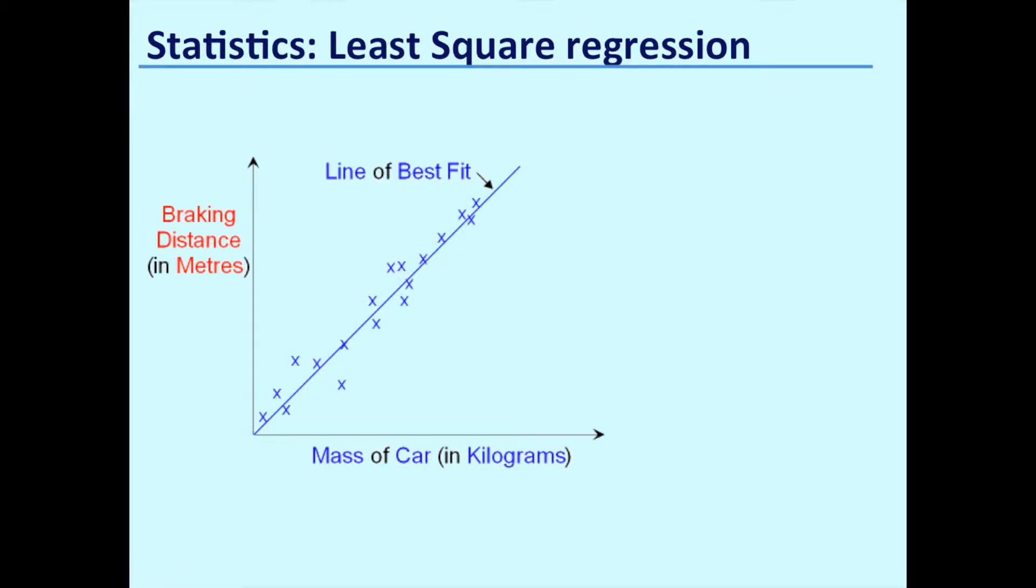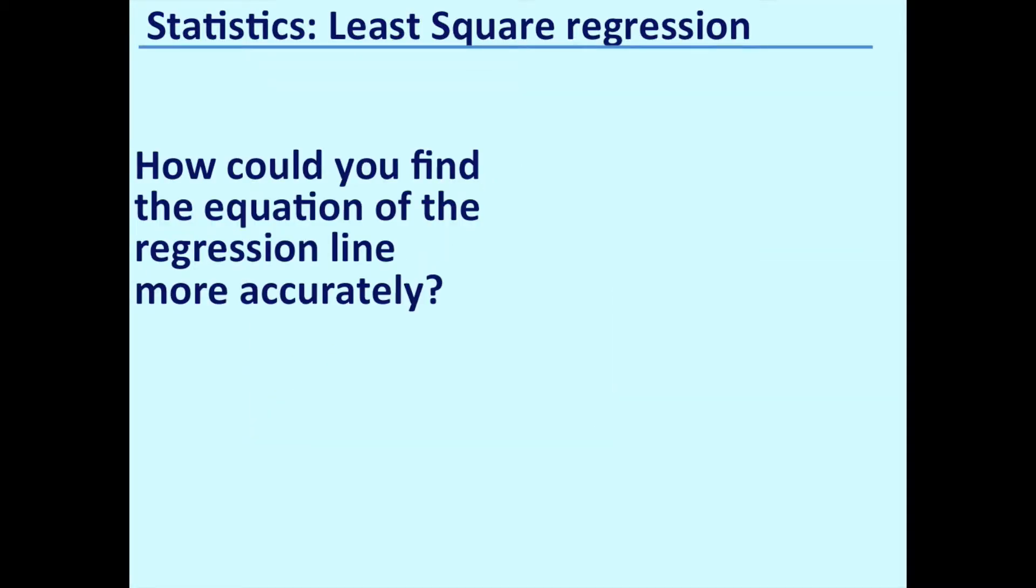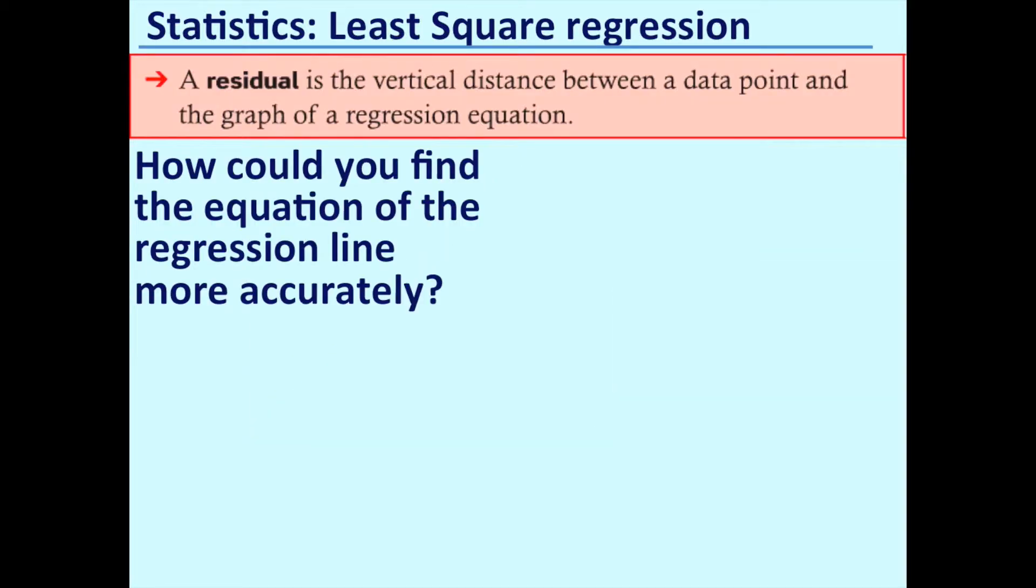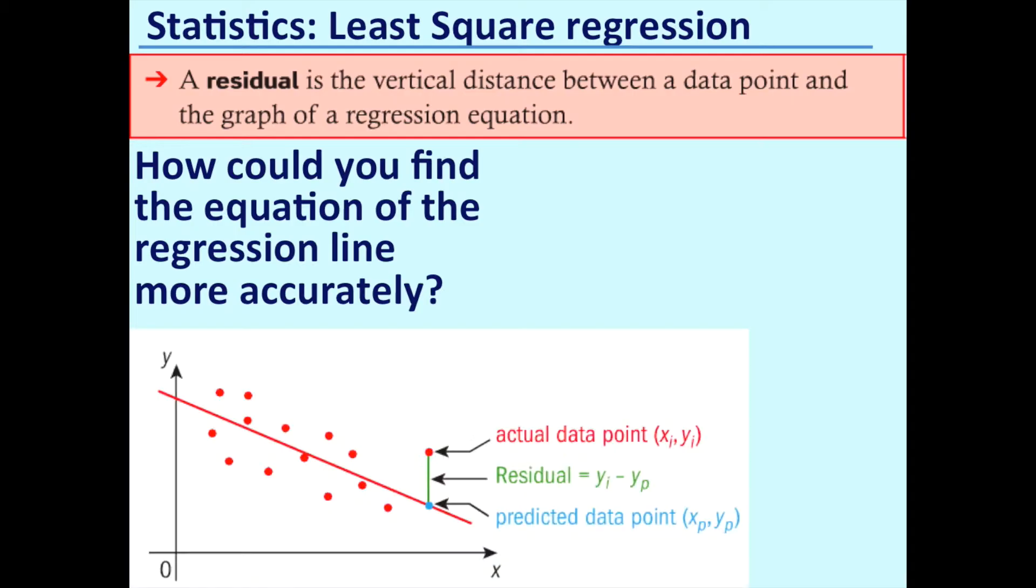However, we also saw in the examples that you could have had a different answer to the person next to you in terms of the equation of the line of best fit and both being right. What we're going to look at today is how we can actually find the best line of best fit so that there is only one answer and we can be a bit more mathematical than 'yours looks about right.' So today, that's essentially what we're looking at - how can we draw the best line of best fit?